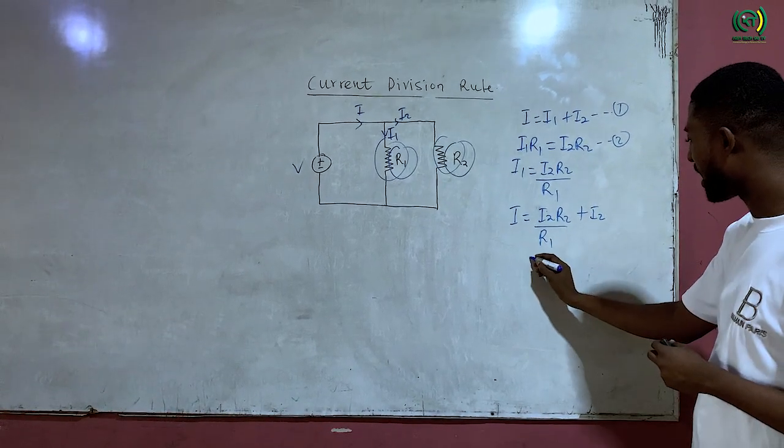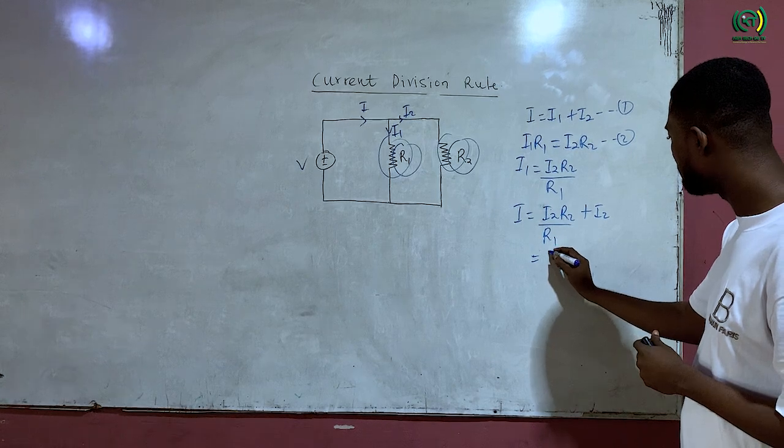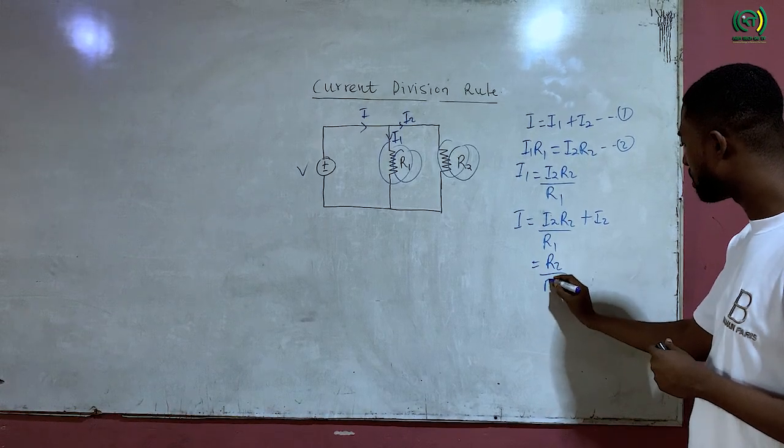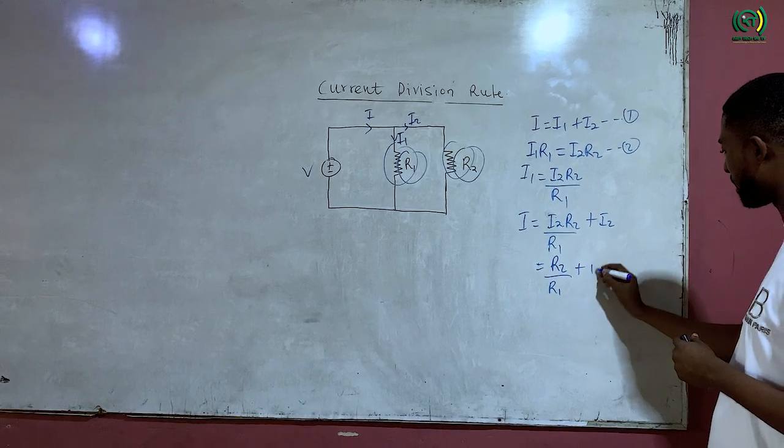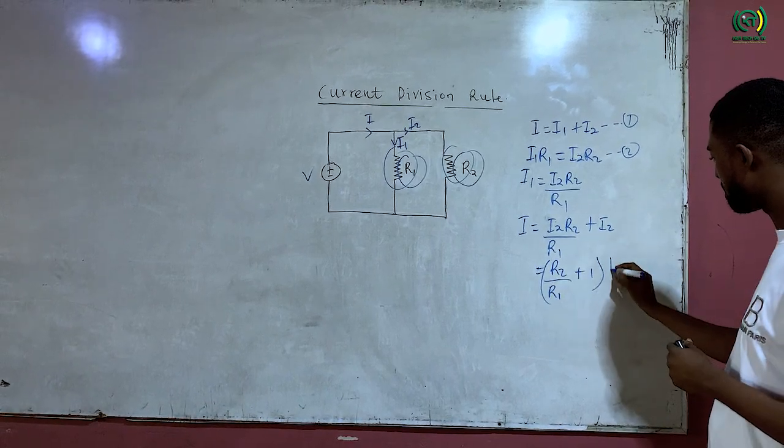Then I will factor I2 out, giving me R2 over R1 plus I2.